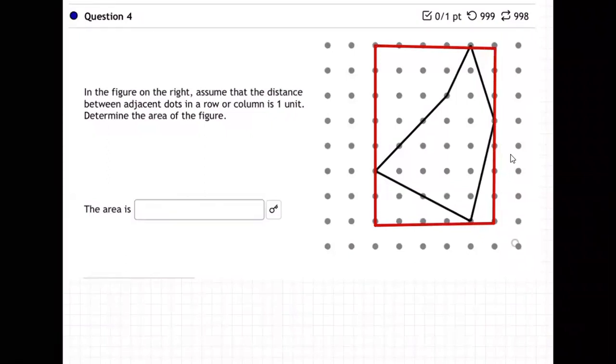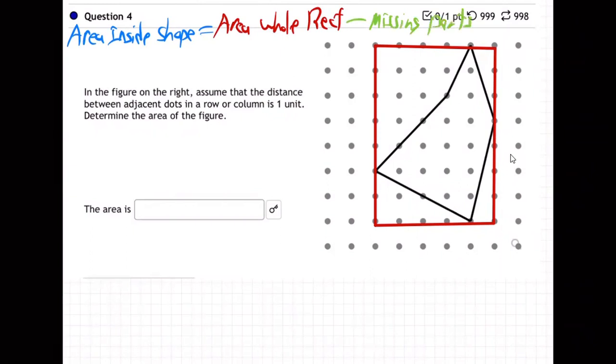So the area of the inside shape is going to equal the area of the whole rectangle minus all the missing parts. That's the game plan.